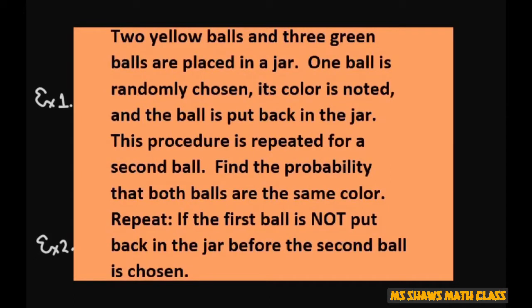Hi everyone! Two yellow balls and three green balls are placed in a jar, so that's a total of five balls. One ball is randomly chosen, its color is noted, and the ball is put back in the jar. Then we repeat it a second time to get the second ball. We want to find the probability that both balls are the same color.